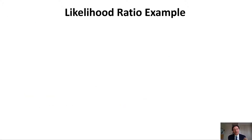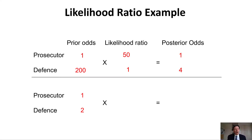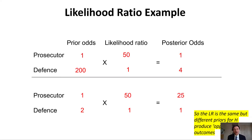Let's look at the likelihood ratio in the context of our virus testing example. Think of the prosecution hypothesis as H has the virus, and the defense hypothesis as she doesn't. The prior odds were about 200 to 1 in favor of the defense. The likelihood ratio was 50. The posterior odds, therefore, are 1 to 4 in favor of the defense — so it's still only a 20% chance she has the virus. But if the prior odds on Sarah having the virus were only 2 to 1 against — perhaps because she has symptoms and has been in contact with somebody who tested positive — then when presented with the evidence of a positive test, the posterior odds now are 25 to 1 in favor of her having the virus. We've got the same likelihood ratio, but completely different priors produce effectively the opposite outcomes.